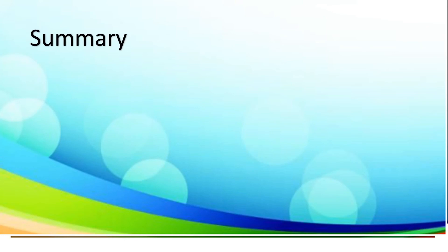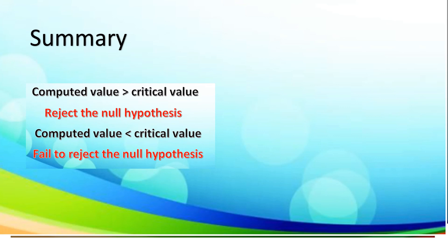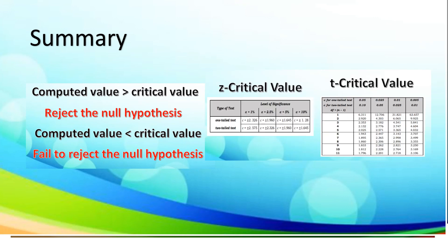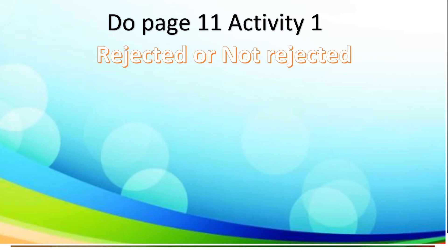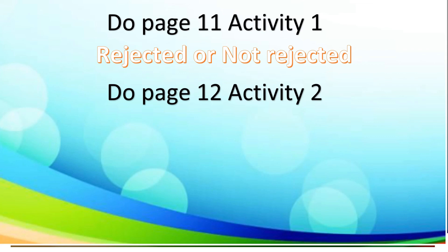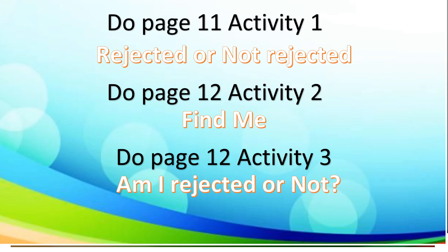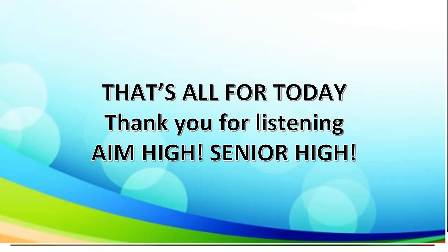Let's take the summary of our lesson. If the computed value is greater than the critical value, we reject the null hypothesis. If the computed value is less than the critical value, we fail to reject the null hypothesis. We utilize two tables: the Z critical value table and the T critical value table. For your activity, open your module on page 11: Activity 1 is entitled Rejected or Not Rejected — decide whether the null hypothesis is rejected or not. Activity 2, Find Me, asks you to complete the table using the T or Z table. Activity 3, Am I Rejected or Not, asks you to color the emoticon red if the null hypothesis is not rejected and blue if it is rejected. That's all for today. Thank you for listening, and remember: Aim High, Senior High!